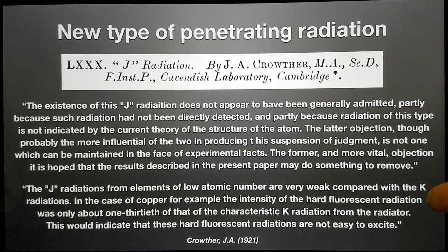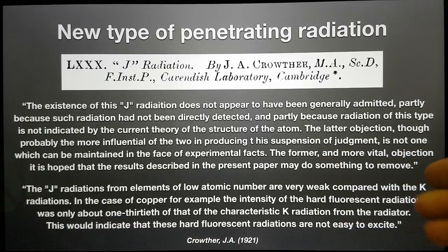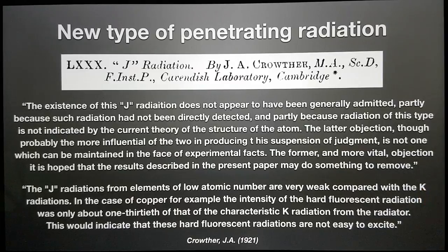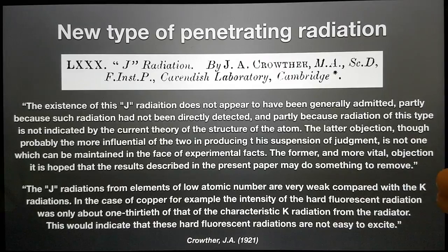The J radiations from elements of low atomic number are very weak compared with the K radiations. In the case of copper, the intensity of hard fluorescent radiation was only about one-thirtieth of the characteristic K radiation. This would indicate that these hard fluorescent radiations are not easy to excite. There was no model of the atom that allowed them to exist, and moreover they were very hard to create.